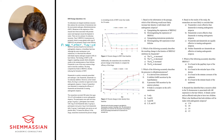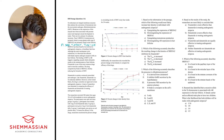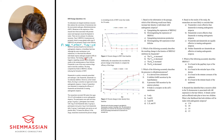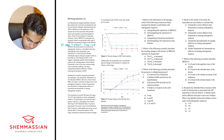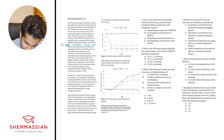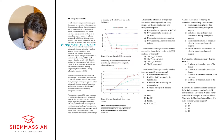SRD5A2 has been found to be involved in androgenetic alopecia, or hereditary hair loss. Although the exact mechanism is not understood, it is theorized that affected individuals express androgen receptors, or AR, on hair follicles. The binding of DHT to AR triggers a signaling cascade, which ultimately results in the miniaturization of hair follicles. Finasteride is one of the most common drugs used to treat this condition. The drug competitively binds to SRD5A2, thereby reducing the formation of DHT.